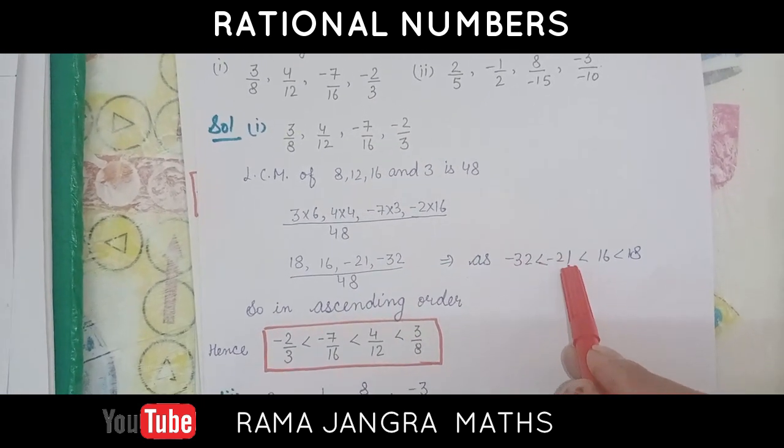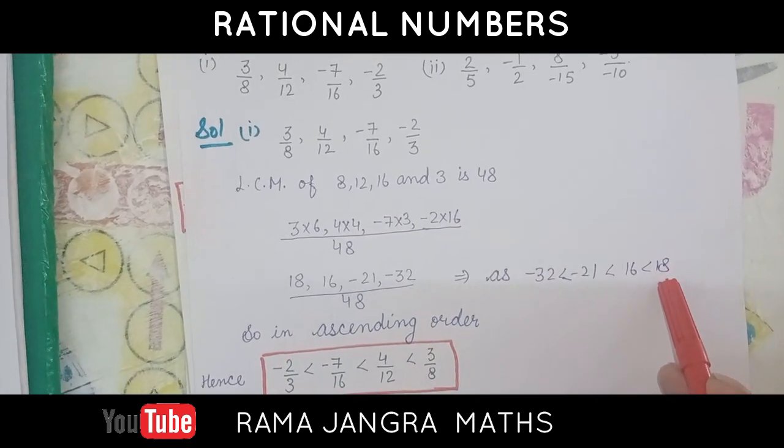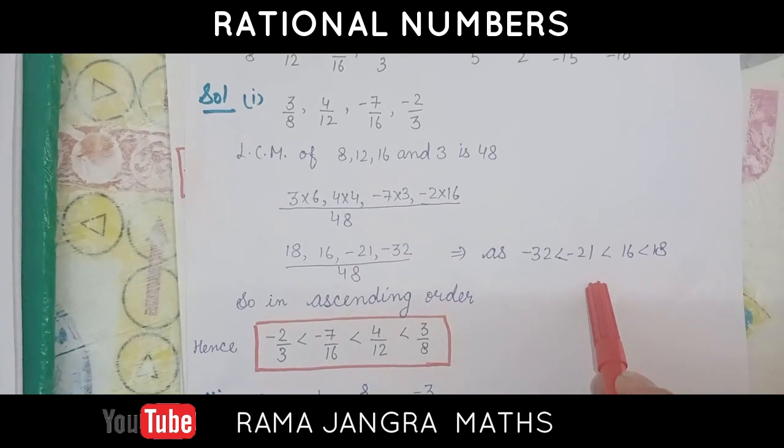So, it is the smallest, then minus 21, then 16, then 18. Now, you have to write these in this order only.